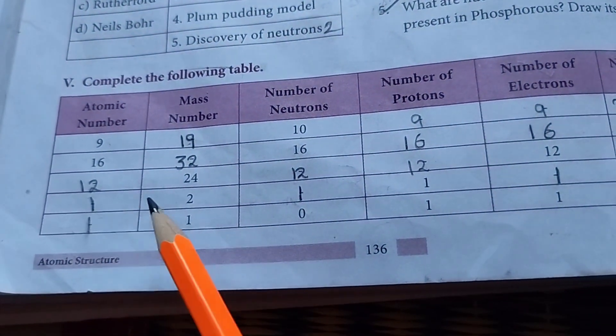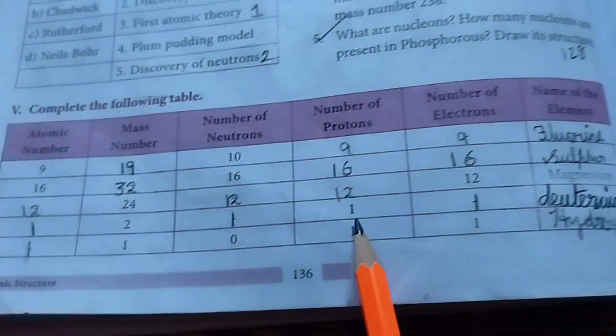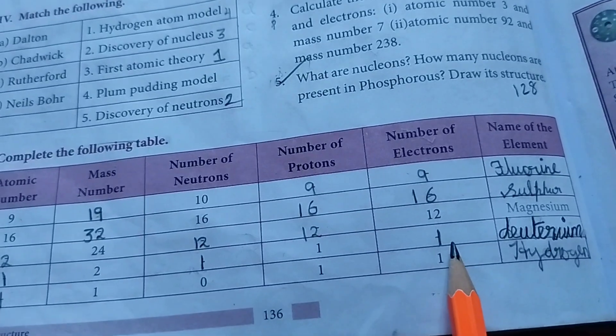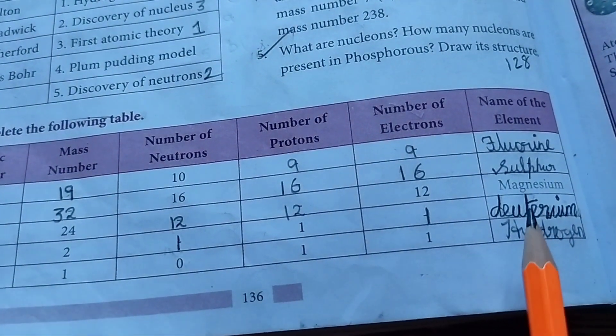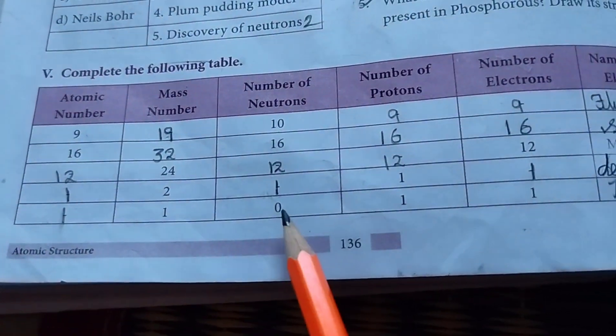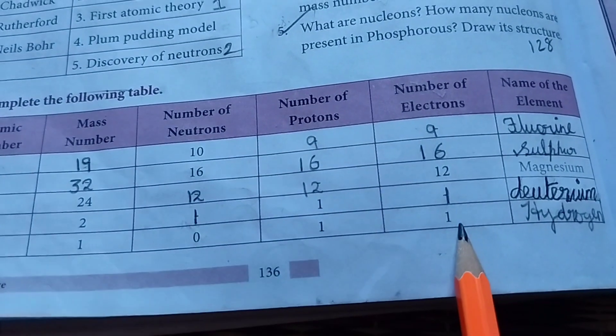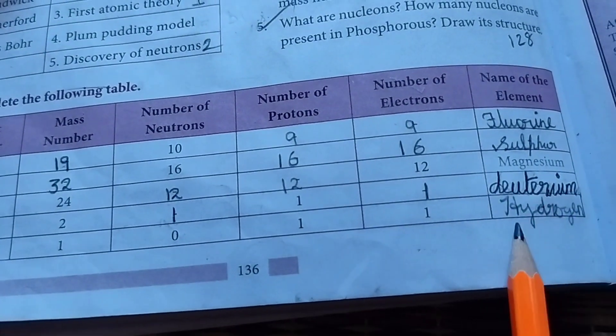Then atomic number 1. Mass number 2. Number of neutrons 1. Number of protons 1. Number of electrons also 1. The element is deuterium. Then atomic number 1, mass number 1, number of neutrons 0, number of protons 1, number of electrons 1. The element is hydrogen.